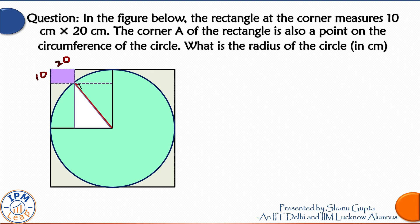Well, not yet, but if we assume the radius of the circle is R, maybe we can express all its sides in terms of R. Okay, let's see if we can do that. See, this vertical line is R, and from this if we subtract the breadth of the rectangle, we get this length equal to R minus 10.